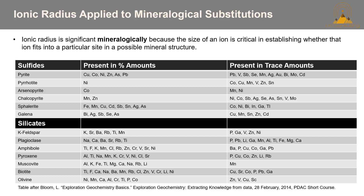Ionic radius is important mineralogically because the size of an ion is critical in establishing whether that ion fits into a particular site in a possible mineral structure. The table below is a great summary of ions that can substitute for different elements in a mineral structure.